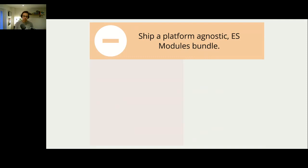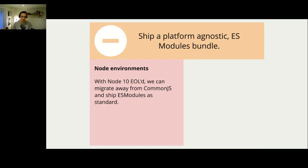Node 10 has been end of life, which means it's not being maintained or updated. So now the lowest version of Node that Puppeteer will officially support will be Node 12, and Node 12 supports ES modules. Currently when we ship Puppeteer we ship a CommonJS version and an ES modules version. In the future we're going to look to remove the CommonJS version and just ship the ES modules build. This isn't going to happen overnight or anytime soon, but we want to take advantage of older Node versions being deprecated and remove some of the burden of maintaining two different bundles.